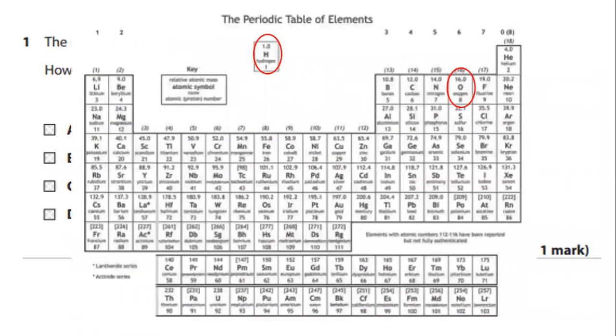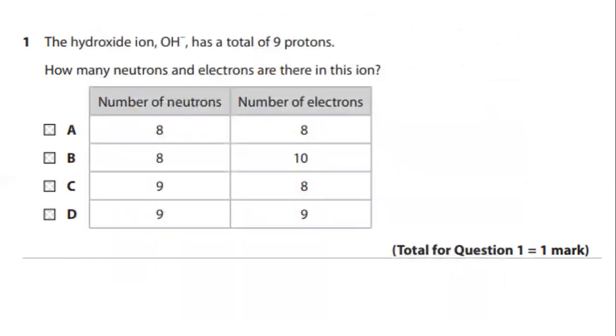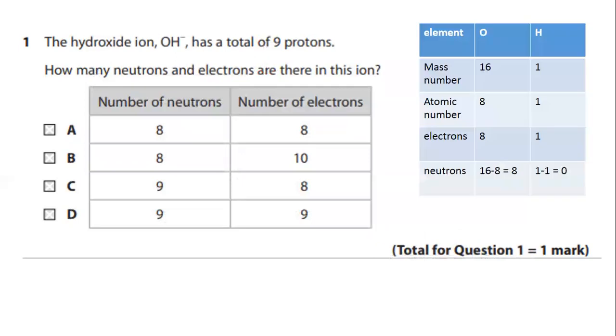To do this, you will have to look into the periodic table of elements provided and spot hydrogen and oxygen and pick the values of atomic number and mass number. If you tabulate them, you will end up with this.